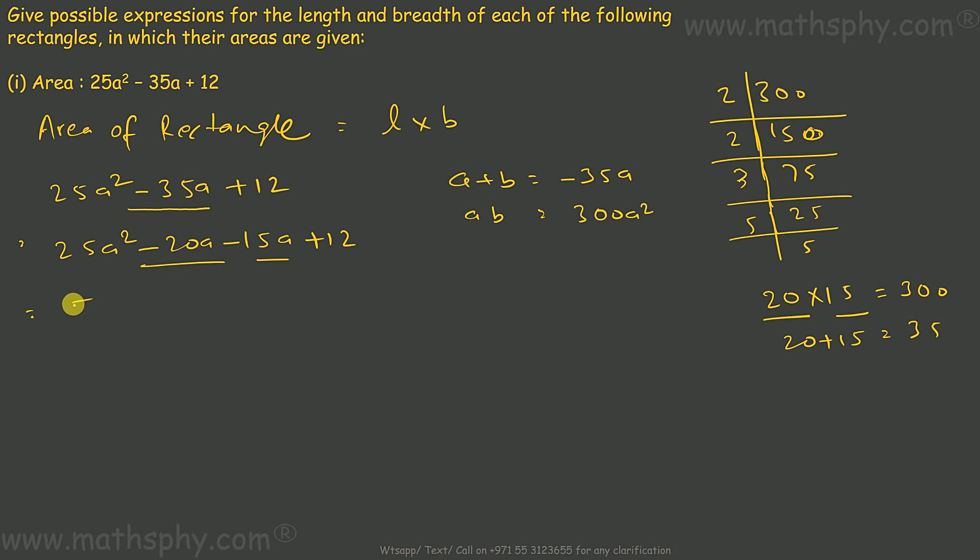So if I take here 5a as common, this comes to 5a minus 4, and if I take here 3 as common, this gives me 5a minus 4. I am taking negative 3 as common. Now I take 5a minus 4 as common, 5a minus 4, this leaves 5a minus 3.